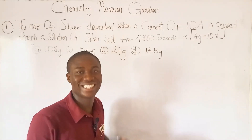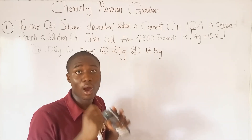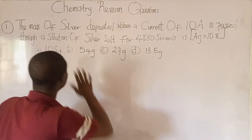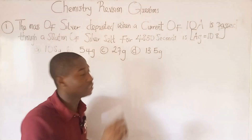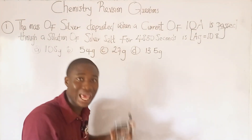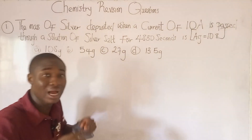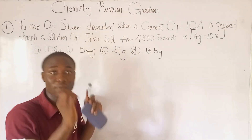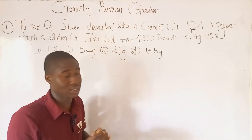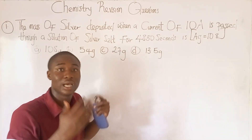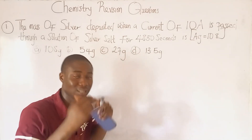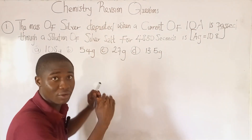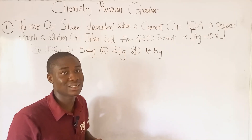Welcome to today's video lesson with Bright Edo. In today's lesson I'll be solving various practice questions in chemistry that cut across various topics. This particular question is from the topic electrolysis and the calculations involved. I've already made a video lesson explaining all the concepts of the calculative aspect of electrolysis — I'll put the link up here. I'll start solving this practice question step by step, and after solving I'll give you a practice question to solve and provide the answer in the comment section.